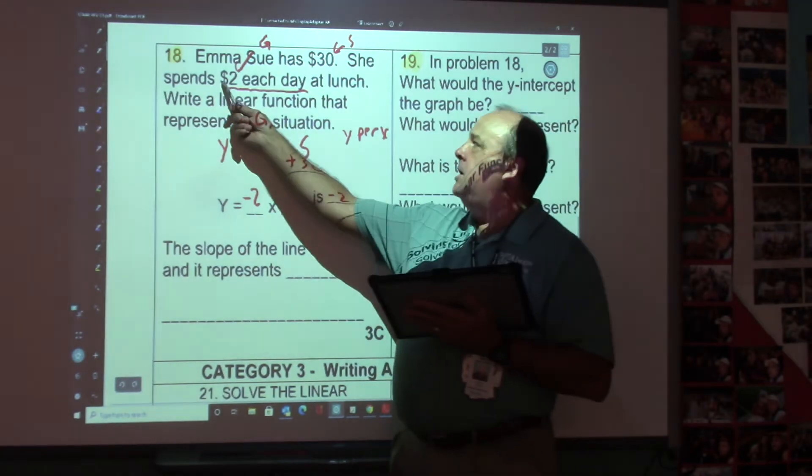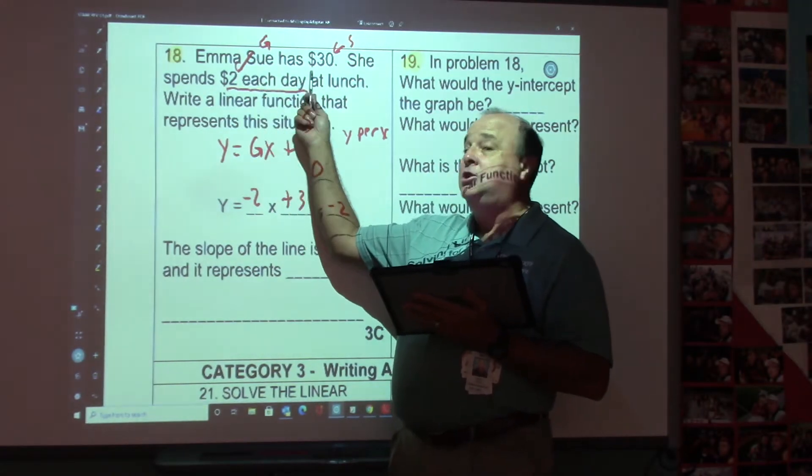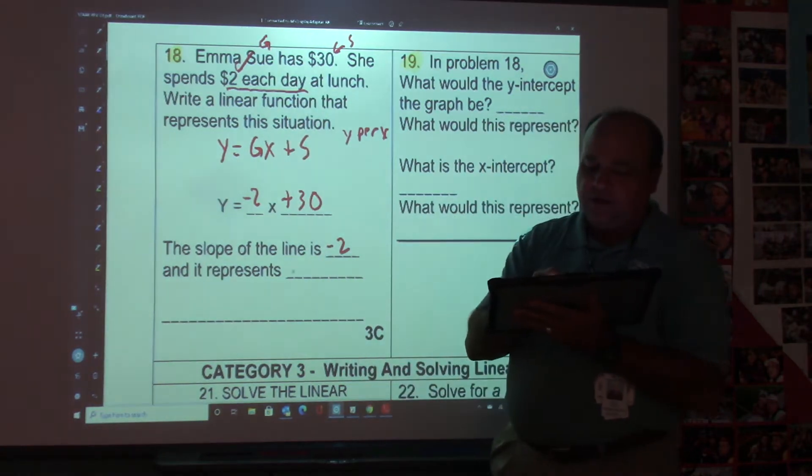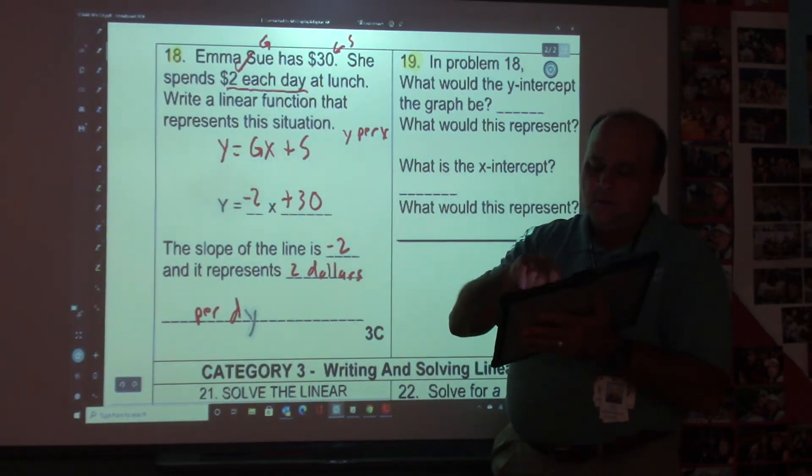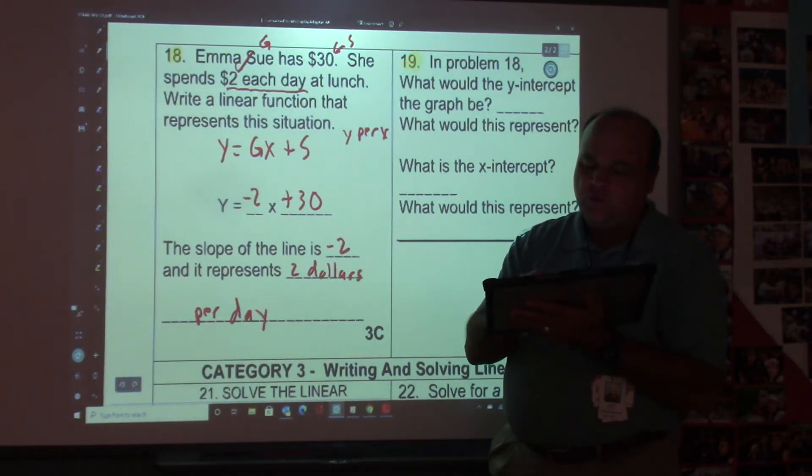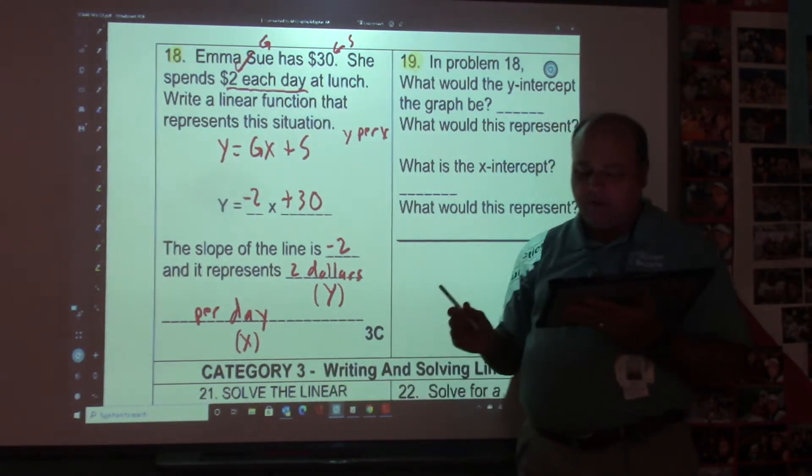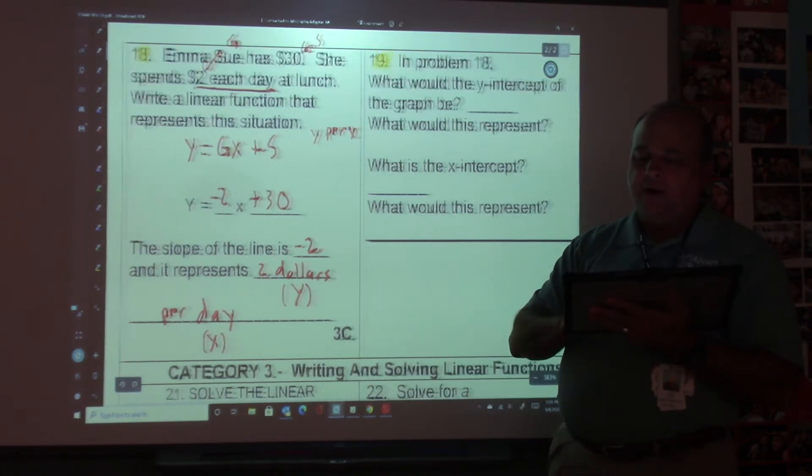It's going to be $2 per or each day. The dollars would be your Y. The days would be your X, wouldn't they? So it represents $2 per day. This will be your Y. This will be your X. That is important. So my Y will be dollars. My X will be days. Let's go to the next part.